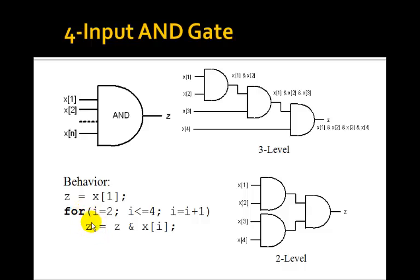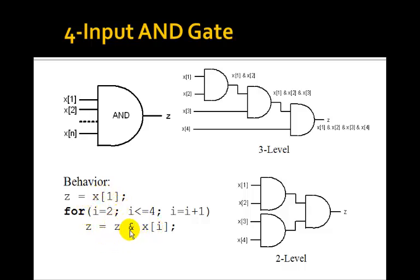We can use a for loop to represent this. In Verilog, you say z equals x1, then: for i equals 2, i less than or equal to 4, i equals i plus 1. Each iteration, z is set to z AND x[i]. First time through, it's x1 and x2; next, x1 and x2 and x3; then x1 and x2 and x3 and x4. Implementing this Verilog statement produces this four-input AND gate.